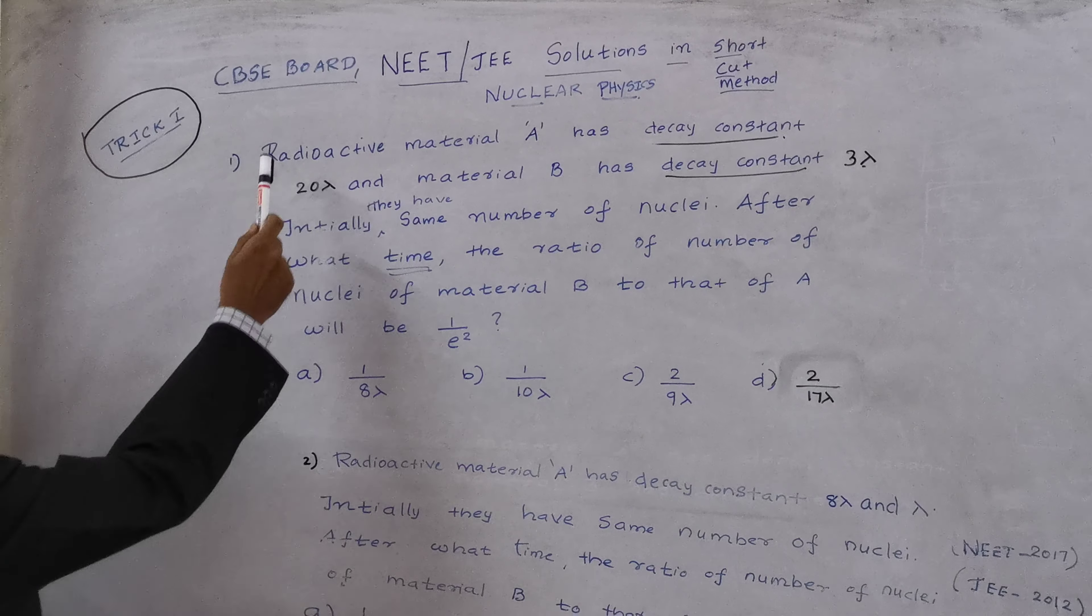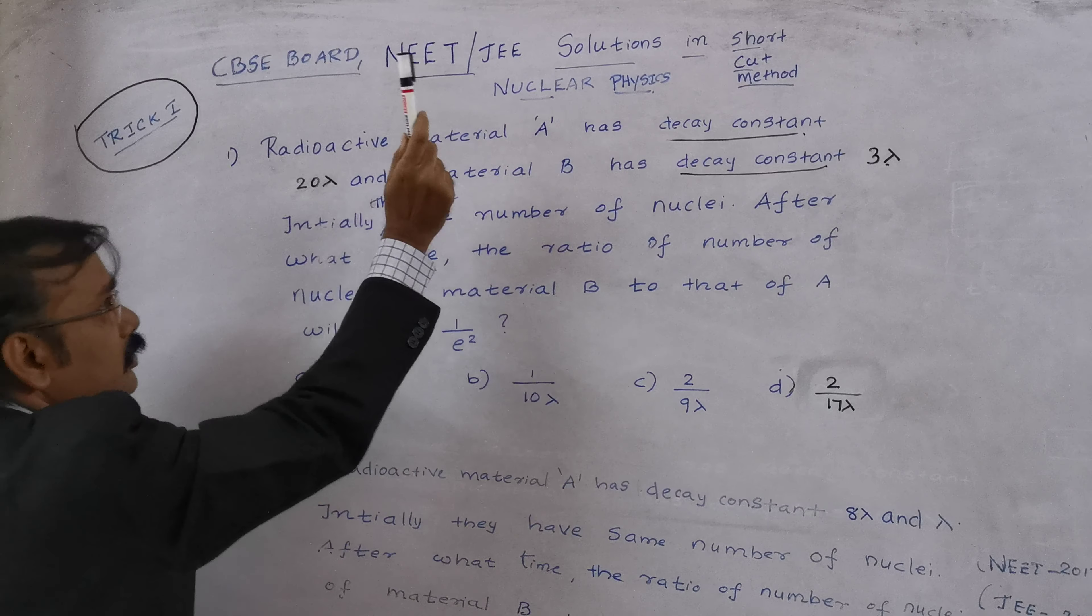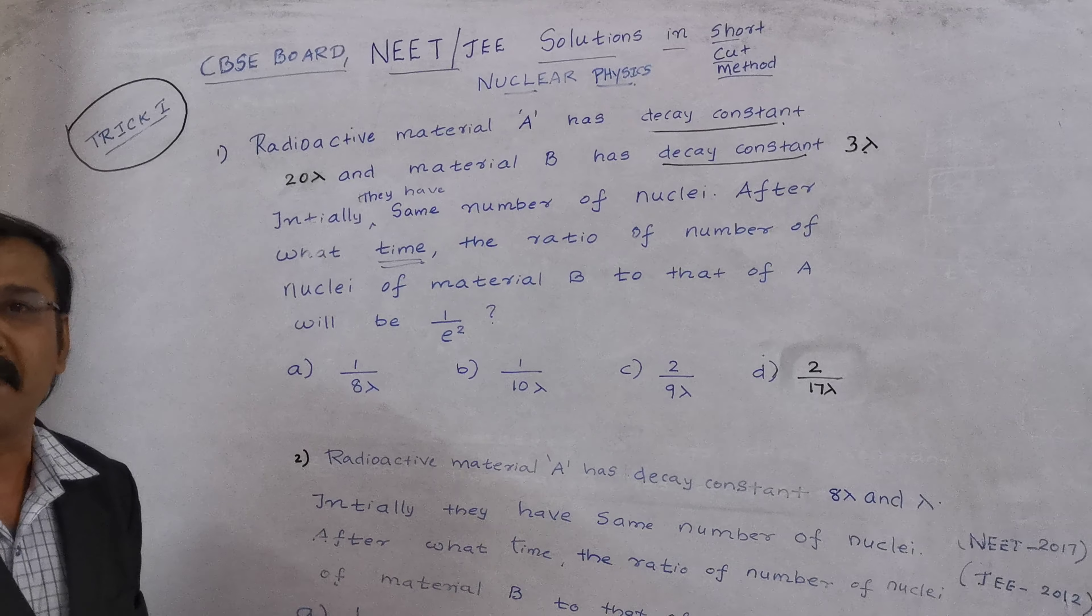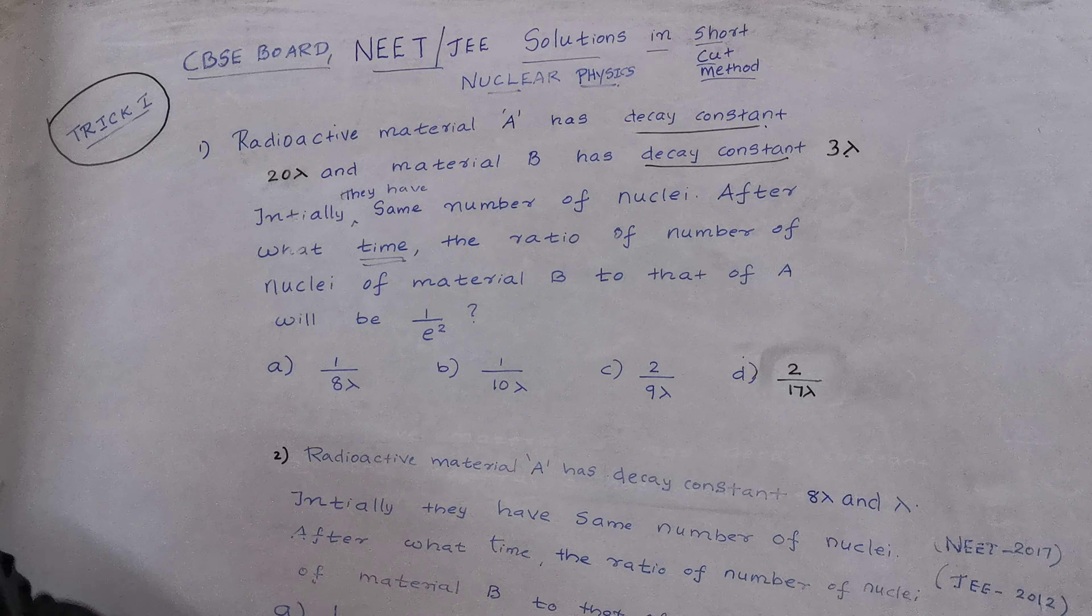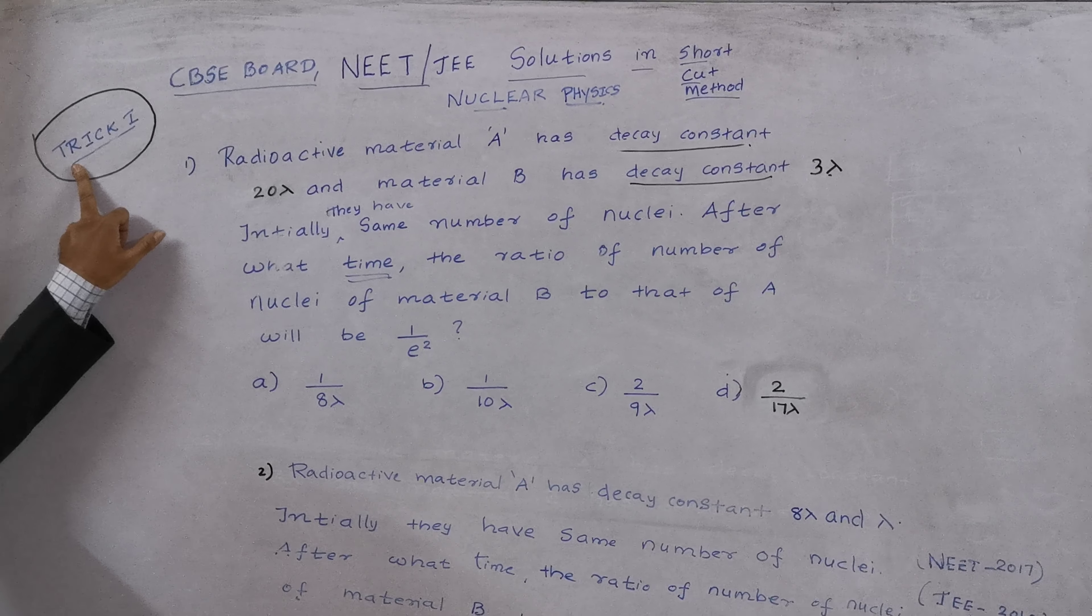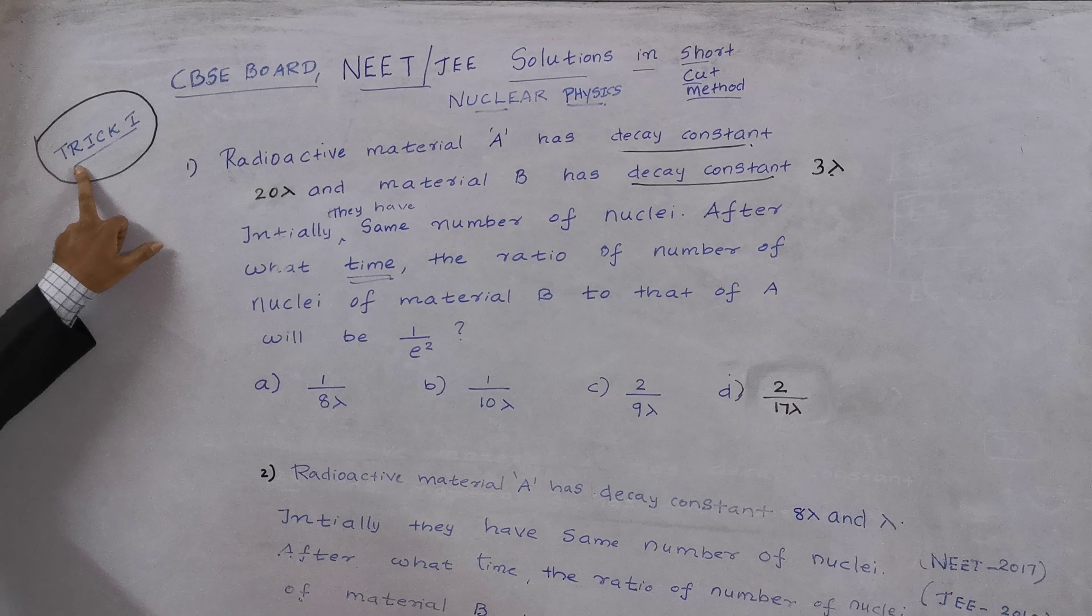So I am just going with a CBSE board, they will be asking one mass. In NEET and JEE also they will be asking one mass, in which we have to give the answer within a maximum of 10 to 20 seconds. So now we are going into the trick number 1. Only thing is we have to learn only the trick name and the concept. We are not going to do any concept, just knowing the trick.